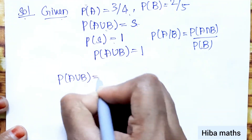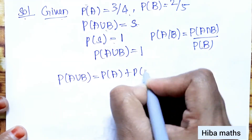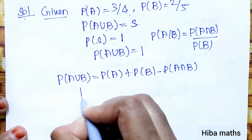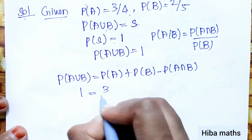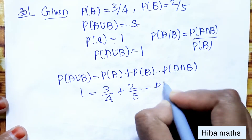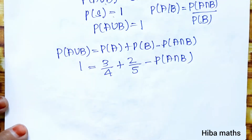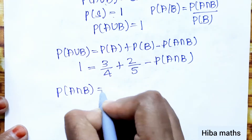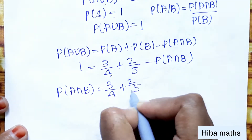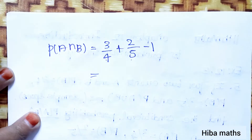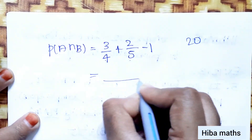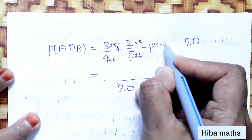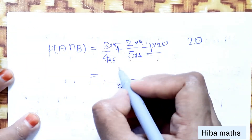Using the addition formula: P(A∪B) = P(A) + P(B) − P(A∩B). Substituting: 1 = 3/4 + 2/5 − P(A∩B). So P(A∩B) = 3/4 + 2/5 − 1.